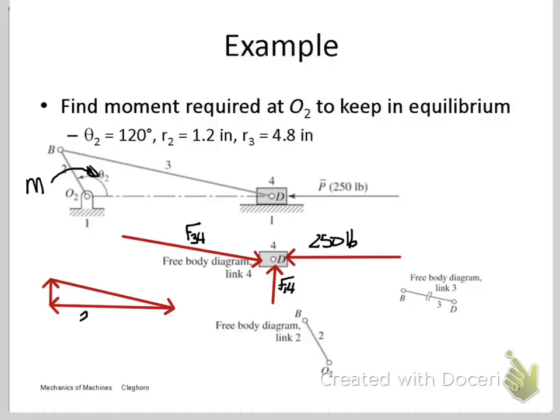If we take those three forces and we draw them in a triangle in their respective directions, the length of each side of the triangle represents the magnitude of that force. We're interested in force 3-4, because that's the one that gets transmitted back to the crank member.